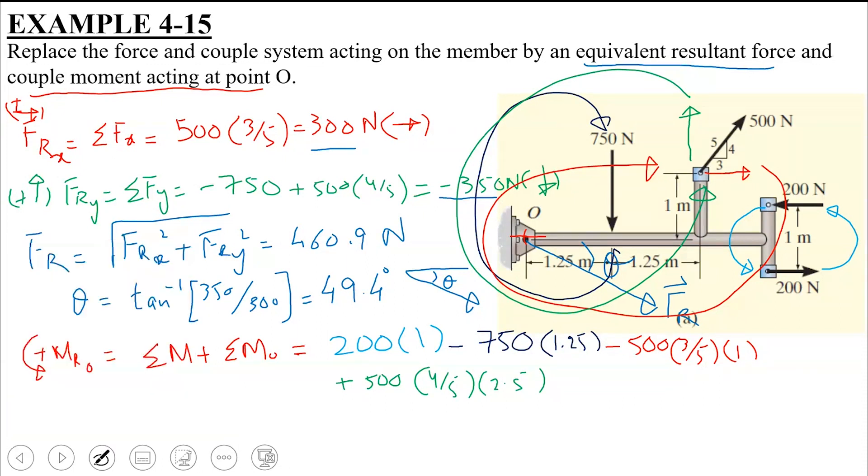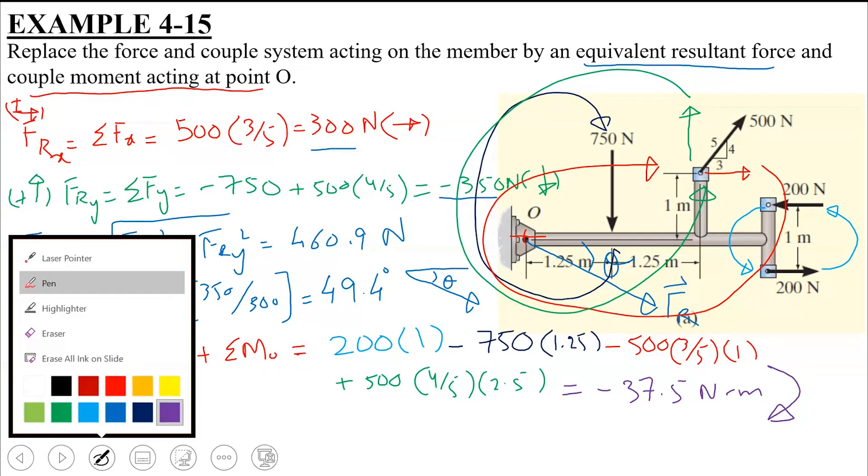So once I take the algebraic sum of all these moments, the final answer or the final moment is going to be minus 37.5 Nm. And this negative sign indicates that the resultant moment is going to be in a clockwise direction.